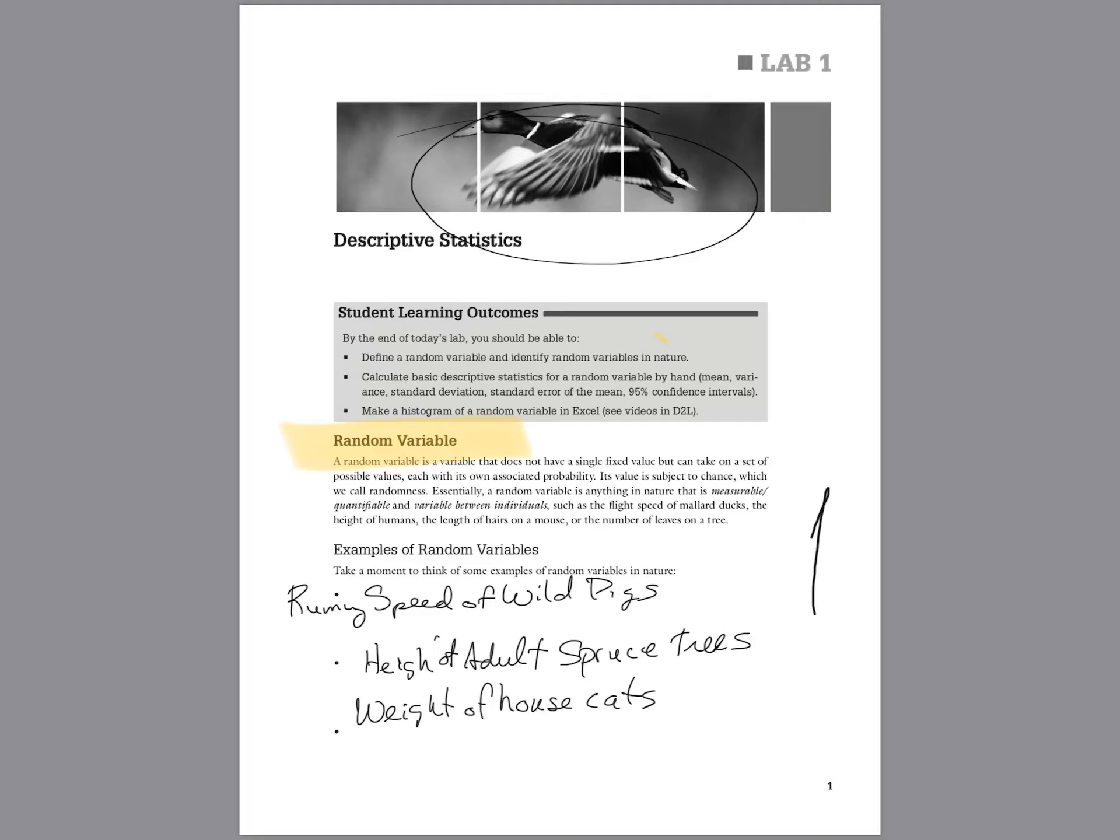The variables that we're measuring, lots of things in nature look like this. If I asked you what the flight speed of ducks were, you could look it up in the encyclopedia. It might say 44 miles per hour, but you know that mallard ducks fly at a variety of different speeds depending on which duck you measure. So if you measured a hundred ducks, they would be spread from some faster and some slower, but there'd be like an average speed. And so we call these random variables.